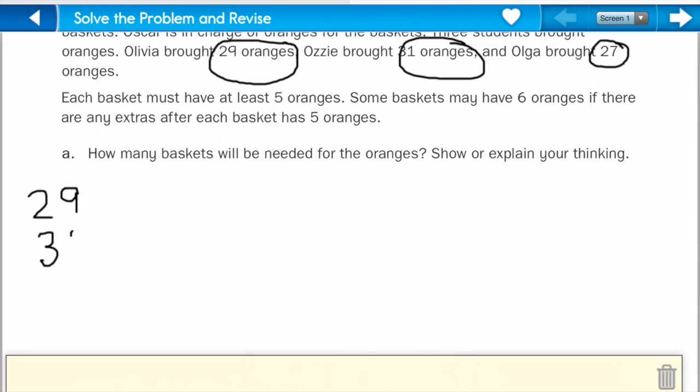We have 29, 31, and 27. So, let's add those together. 29, 31, plus 27. Okay, so let's add those up. Here we get 17, and we carry the 1. We add 1, plus 2, plus 3, plus 2 more. We get 87. So, all together, we have 87 oranges.